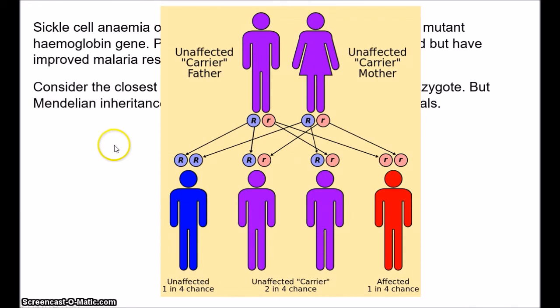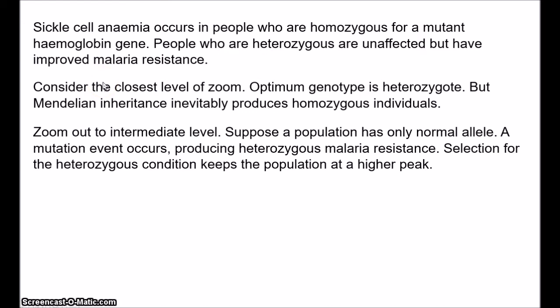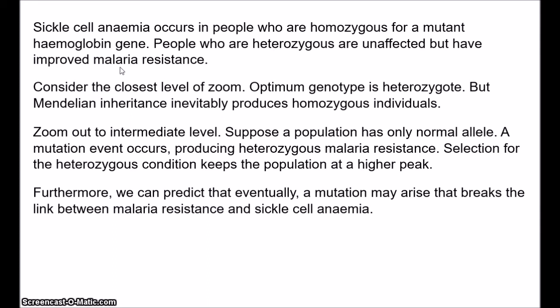But suppose we zoom out to an intermediate level, looking at various populations over longer timescales. If a population has just the normal allele and a mutation event occurs introducing heterozygous resistance to malaria, this clearly improves the fitness of the population and pushes it higher up the adaptive landscape. Selection for the heterozygous condition keeps it at this peak — despite the fact that other processes disrupt the heterozygous condition, selection is keeping it at the peak. Furthermore, looking at a slightly longer timescale, we can expect that sooner or later another mutation event will probably occur that breaks the link between malaria resistance and sickle cell anaemia — a mutation that protects against malaria without causing sickle cell anaemia — because on longer timescales, new mutations arise that can break biological constraints that obtain on shorter timescales.